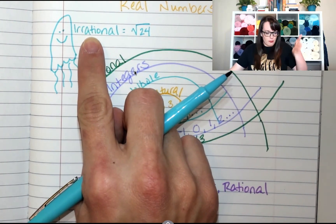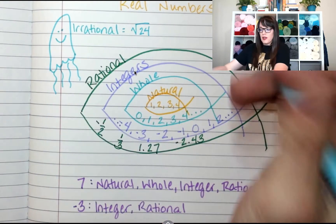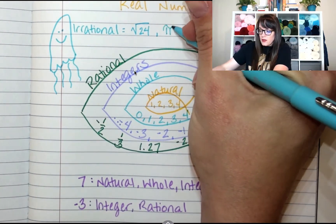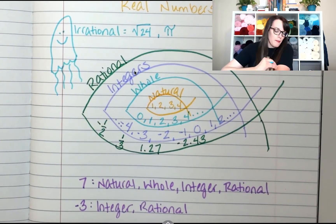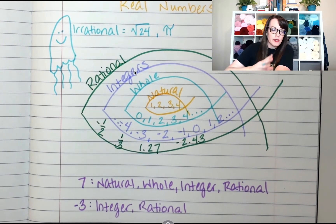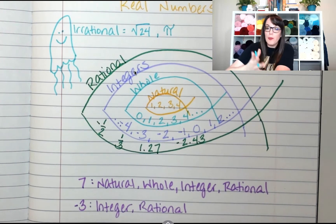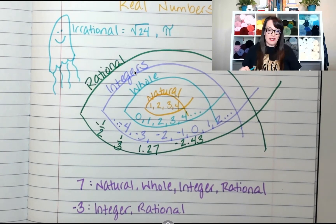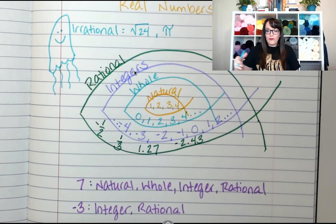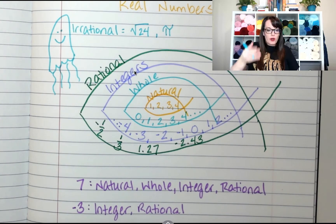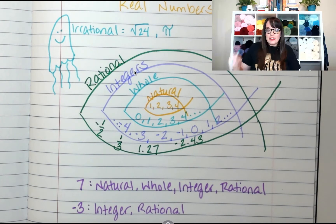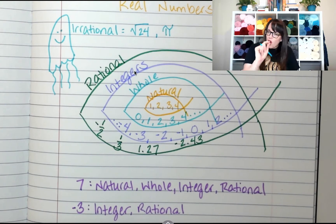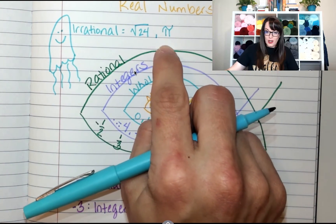Another irrational number we deal with is pi. Pi goes on forever, it never repeats, it has no pattern. People all over the world spend hours memorizing digits of pi. It starts out 3.14 — that's really all you'll ever need — but it keeps going: 3.14159 forever. Nobody can say 'there it is,' because you can always get a little bit more specific. So it's irrational.